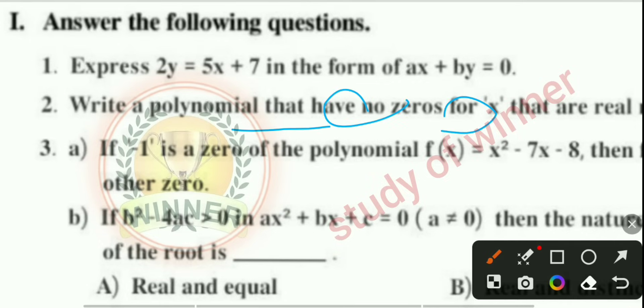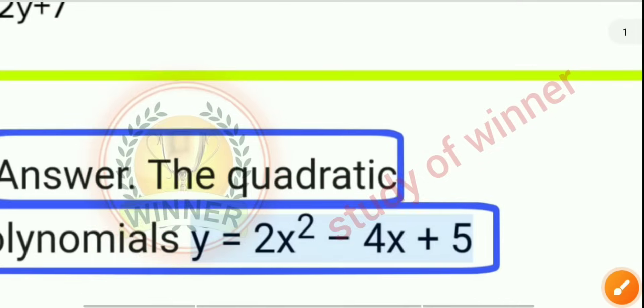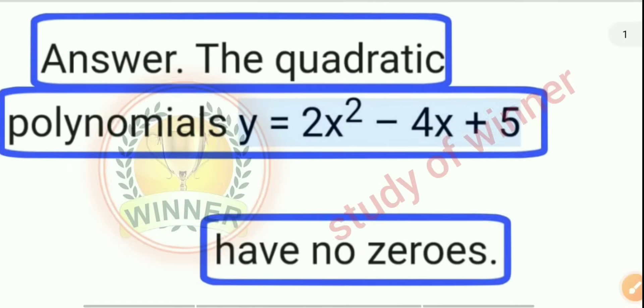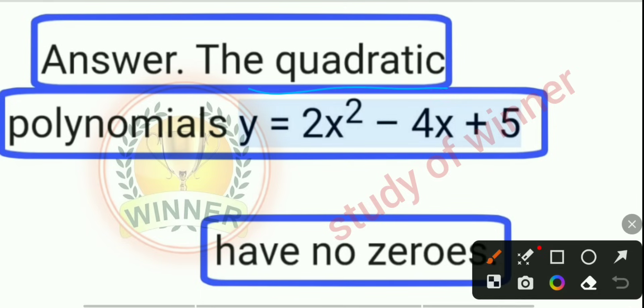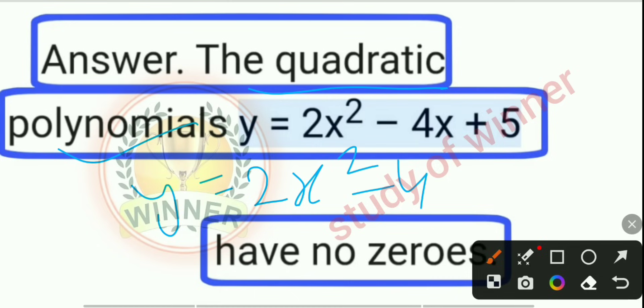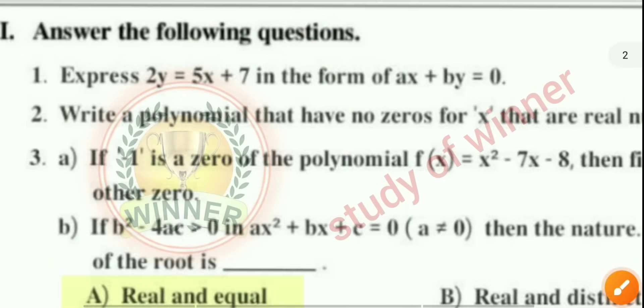This is the answer for the second question. The quadratic polynomial y = x² - 4x + 5 has no real zeros. Next is the third question.